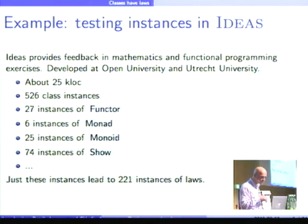What matters is that it has about 25,000 lines of code. It has 526 class instances, of which 27 of Functor, 6 of Monad, 25 Monoids, 74 Show. And here I don't count the derived instances.